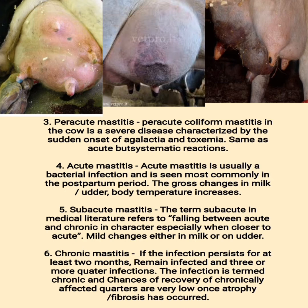(5) Subacute mastitis — the term subacute in medical literature refers to falling between acute and chronic in character, especially when closer to acute; mild changes occur either in milk or on udder. (6) Chronic mastitis — if the infection persists for at least two months and remains infected in three or more quarter infections, the infection is termed chronic. Chances of recovery of chronically affected quarters are very low once atrophy or fibrosis has occurred.